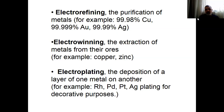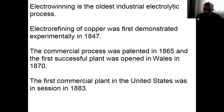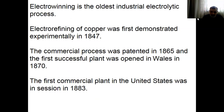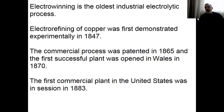Electroplating is the oldest industrial electric process. Electrorefining of copper was first demonstrated experimentally in 1847. The commercial plant was in 1865, and the first successful plant was opened in Wales in 1870. The first commercial plant in the United States was started in 1883. So it's a very old process, but straightforward, easy to apply, and a very clean process.